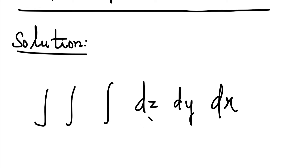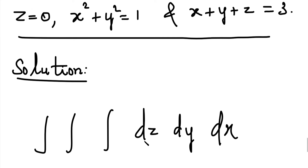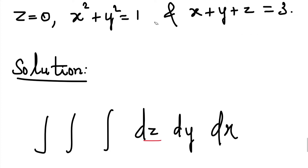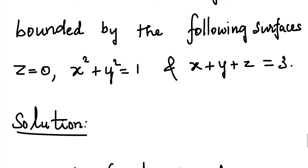Let's determine the limits. The inner integration is with respect to z, so first we have to find the limit of z. The first equation gives us the lower limit of z. That is, the lower limit of z is 0.